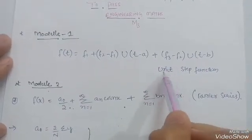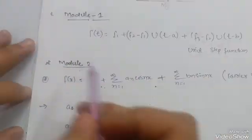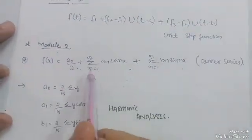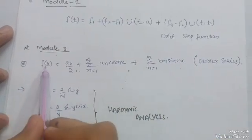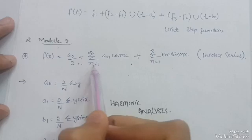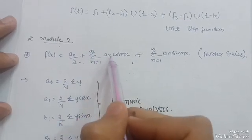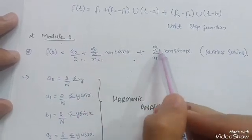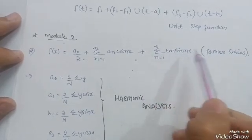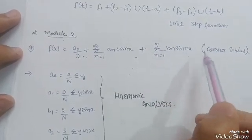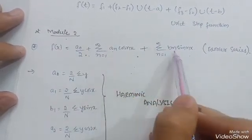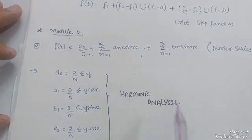Module 2 covers the Fourier series. You have to remember the Fourier series formula: f(x) = a₀/2 + Σ(n=1 to ∞) aₙ cos(nx) + Σ(n=1 to ∞) bₙ sin(nx). You just have to put the values of a₀, aₙ, and bₙ into this formula to get the Fourier series.